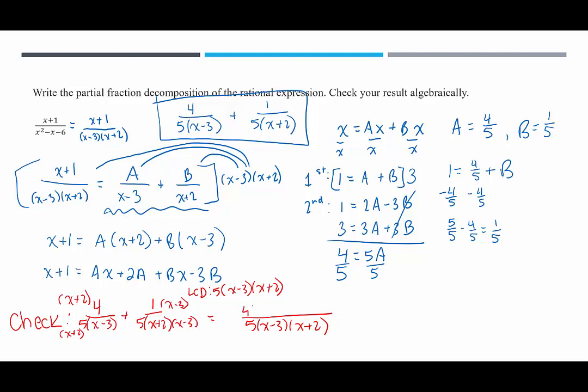The first fraction is missing the factor of x plus 2, so I'm going to multiply that to both the numerator and denominator. The second fraction is missing an x minus 3 factor in the denominator. Now they have the same denominator, so I can combine into one. In the numerator, I have 4 times x plus 2, plus 1 times x minus 3. Now we can distribute, we get 4x plus 8 plus x minus 3, divided by 5 times x minus 3 times x plus 2. 4x plus x is 5x, 8 minus 3 is 5.